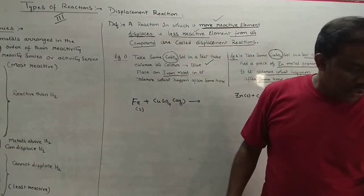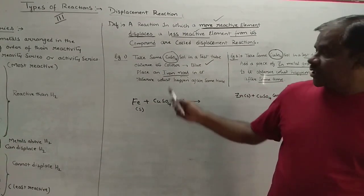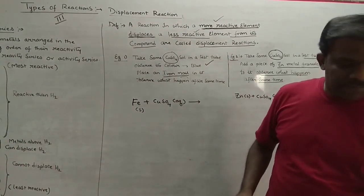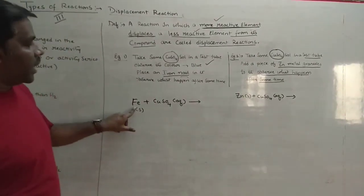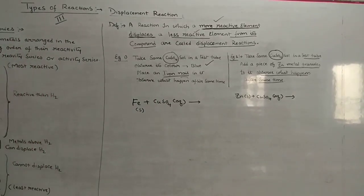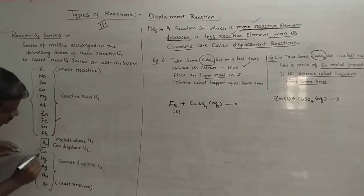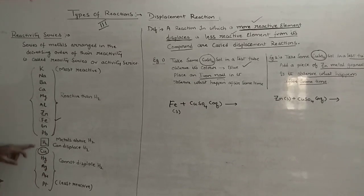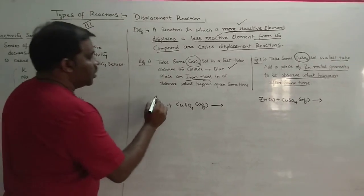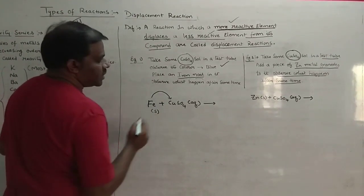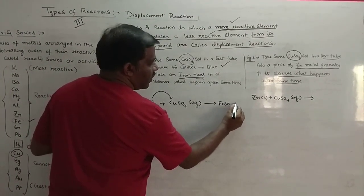Let us try to understand the displacement reaction clearly. What happened? We added iron to copper sulfate solution. Looking at the reactivity series, iron is more reactive than copper. So what happens is the more reactive iron displaces the less reactive copper to form FeSO₄ plus Cu.